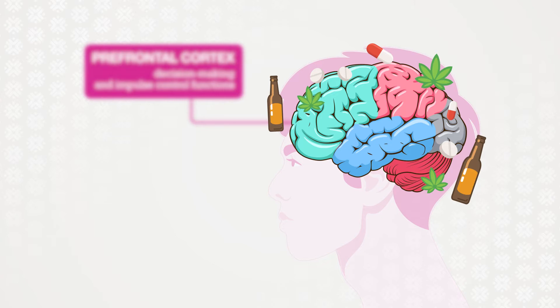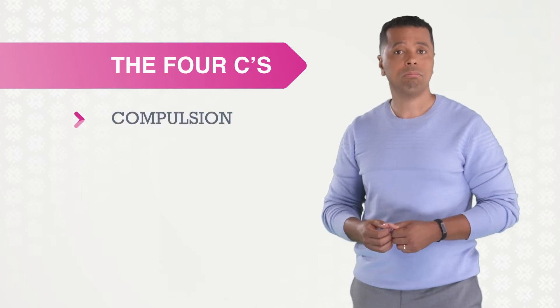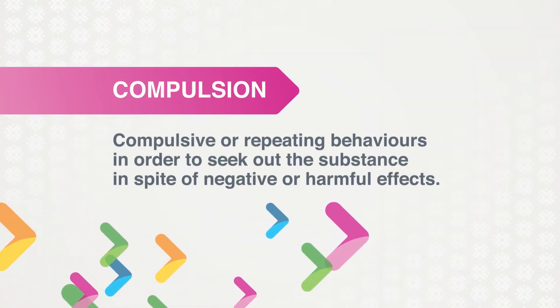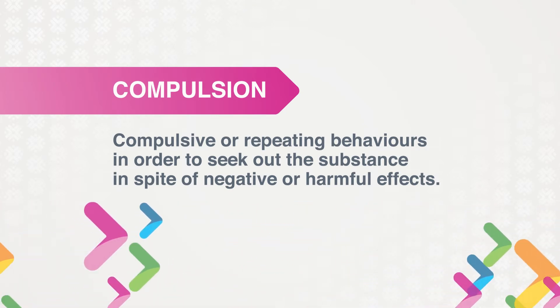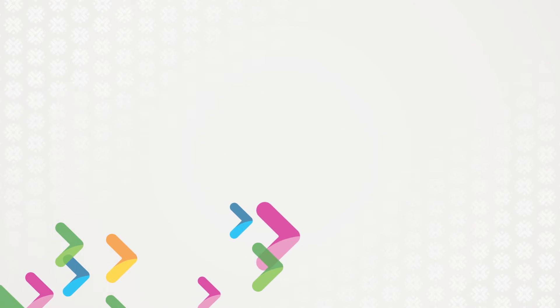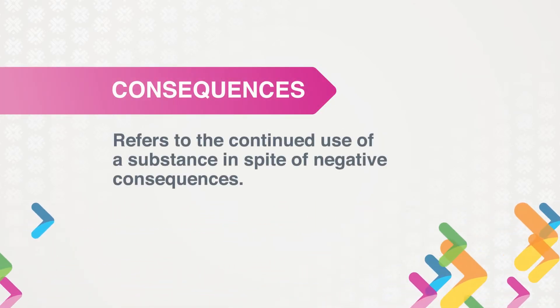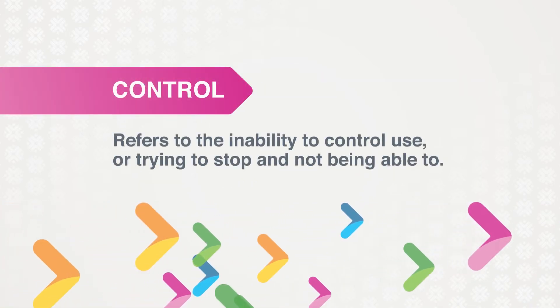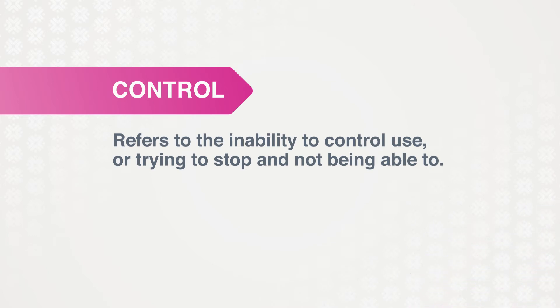This process can cause the decision-making and impulse control functions of the prefrontal cortex to become impaired, making it difficult to stop using substances even when a person wants to. To understand problematic substance use and substance use disorder, it may be helpful to think of the four C's: Compulsion — compulsive or repeating behaviors to seek out the substance despite negative effects; Cravings — physical cravings that feel the same as the need for water or food; Consequences — continued use despite negative consequences; and Control — the inability to control use, or trying to stop and not being able to. When all four C's are present, a person is thought to be using substances problematically and would likely meet the criteria for a substance use disorder.